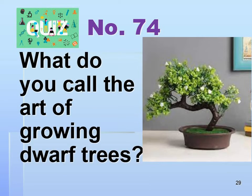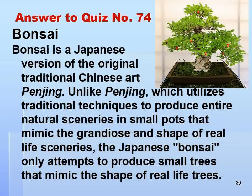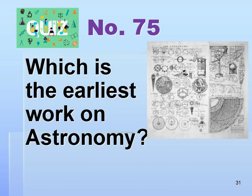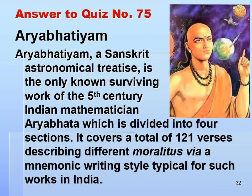Number 74. What do you call the art of growing dwarf trees? Answer: Bonsai. Number 75. Which is the earliest work on astronomy? Answer: Aryabhatiya.